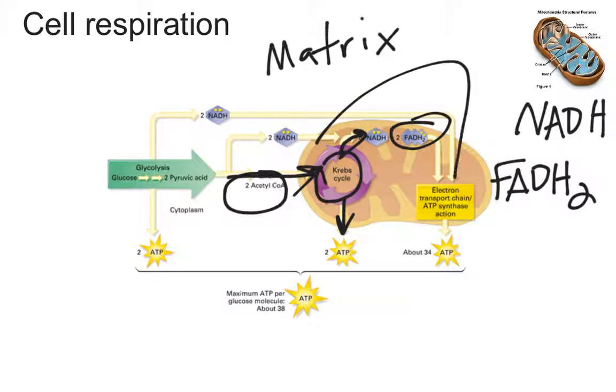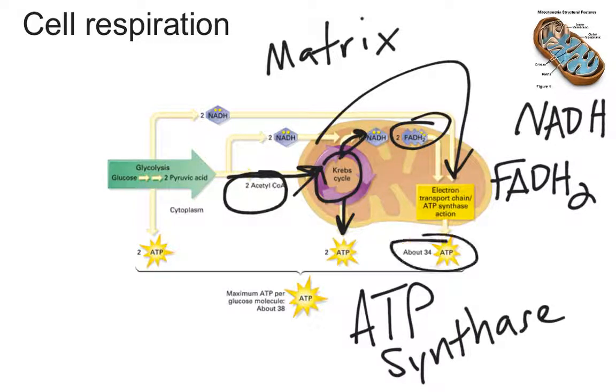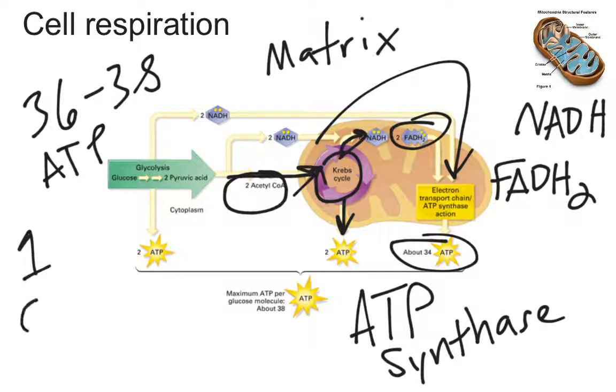All of those electrons wind up in the electron transport chain, which has a special enzyme called ATP synthase that cranks out a lot of ATP, between 28 and 34. On average, we get between 36 and 38 ATP molecules from one molecule of glucose. The electron transport chain happens in the cristae of the mitochondrion, in that inner membrane.